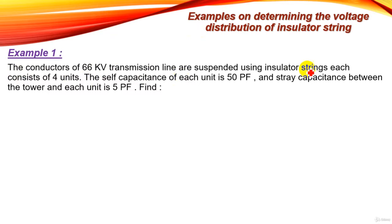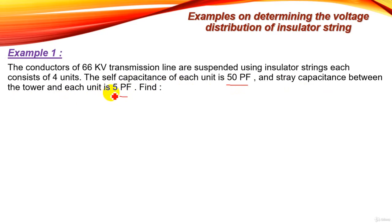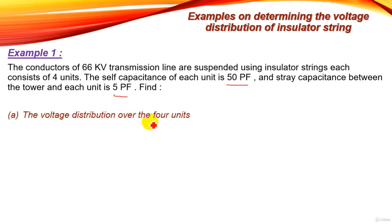Example 1: The conductors of a 66 kilovolt transmission line are suspended using insulator strings, each consisting of four units. The self-capacitance or string capacitance of each unit is 50 picofarad, and the stray capacitance between the tower and each unit is 5 picofarad. What is required: first, the voltage distribution over the four units; second, the string efficiency.